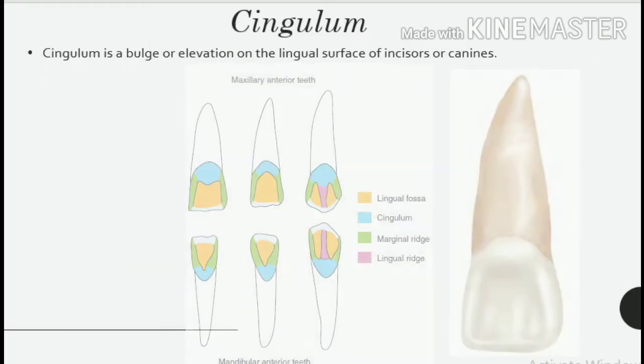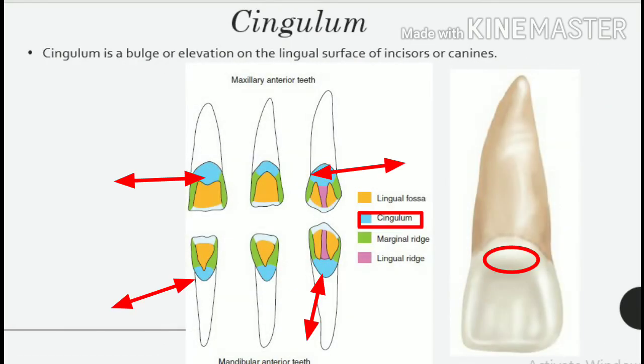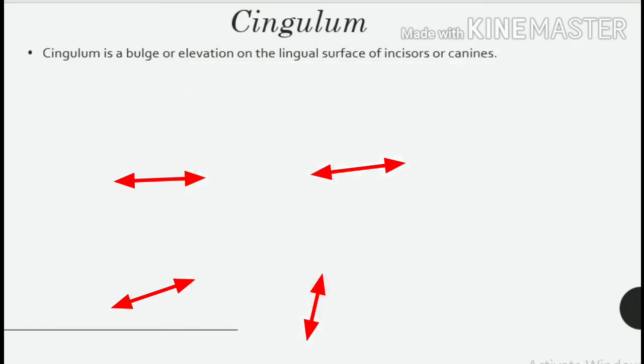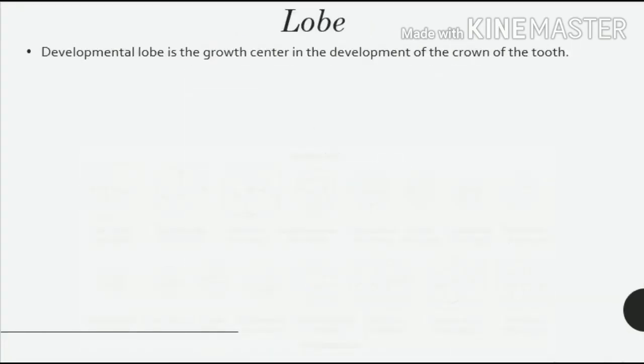Cingulum. The cingulum is a bulge or elevation on the lingual surface of incisors or canines. It is the lingual lobe of the anterior teeth and makes up the bulk of the cervical third of the lingual surface.